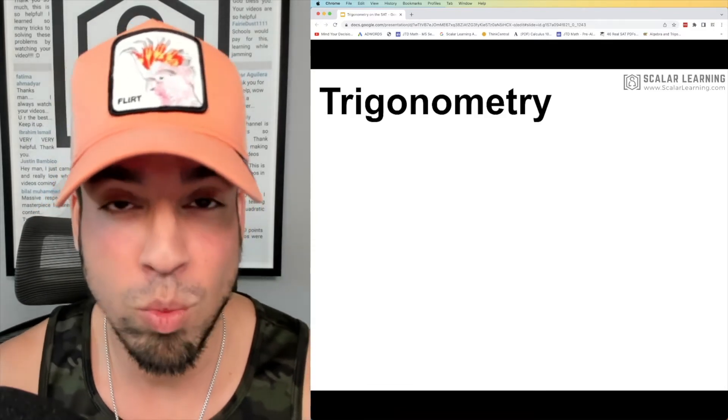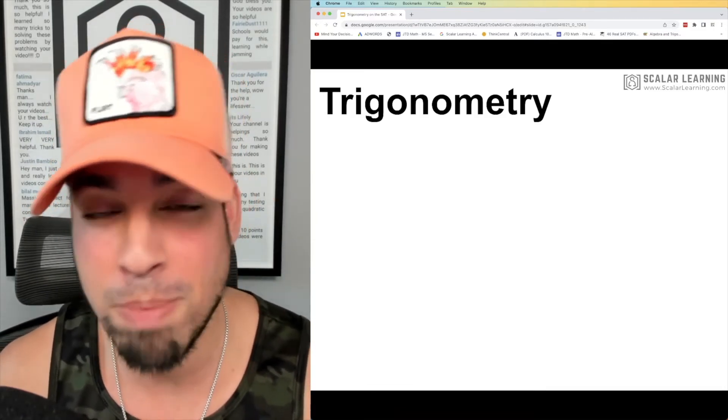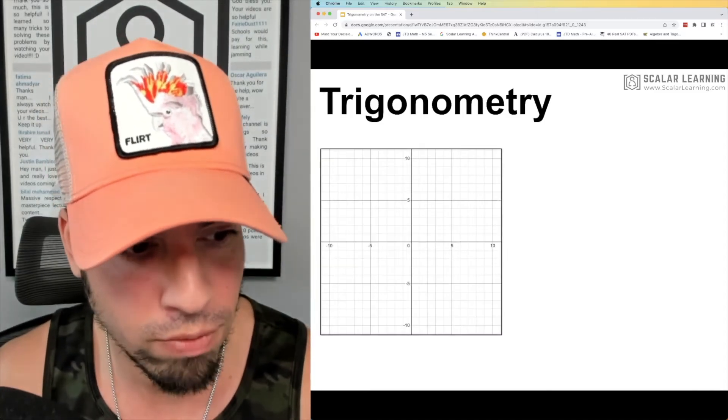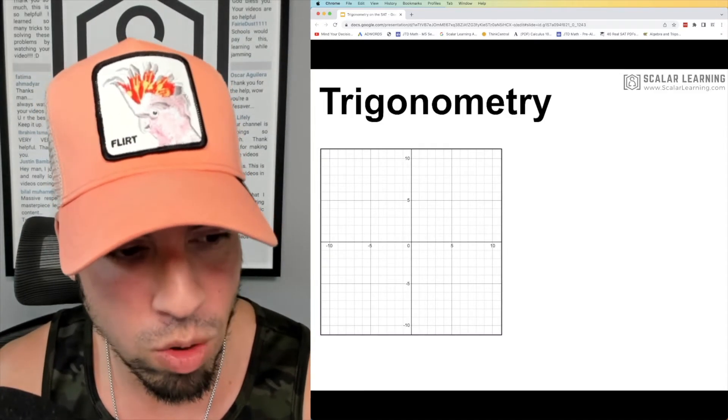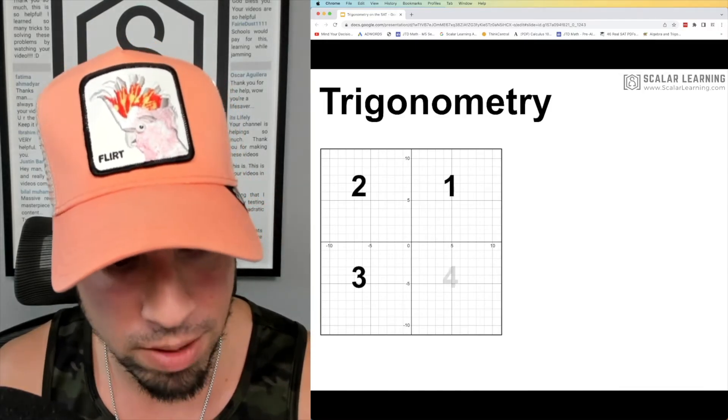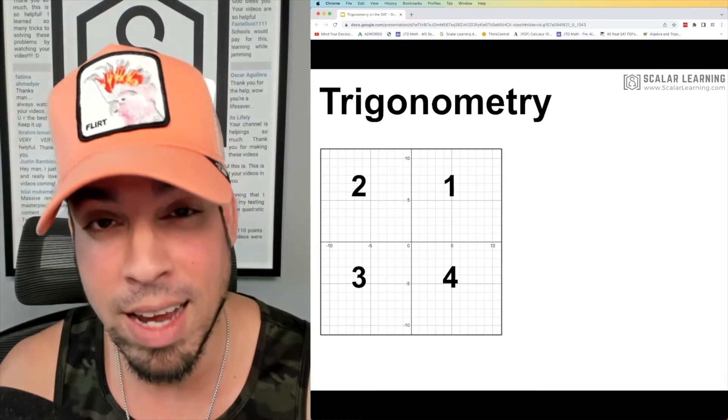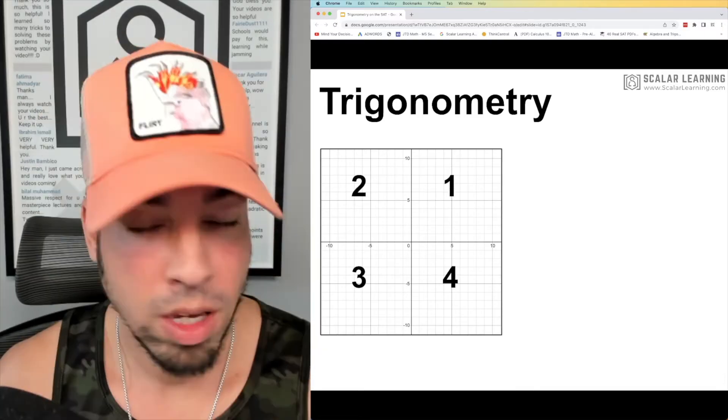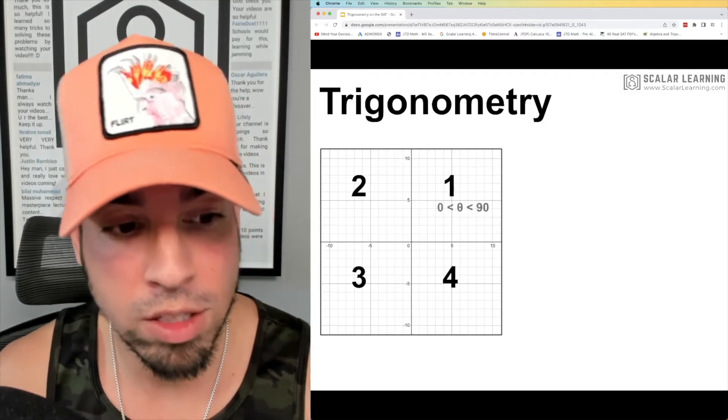The other thing we want to be familiar with on the SAT is where sine, cosine, and tangent are positive and negative—so that's important as well. If you look at this quadrant here, four quadrants, the standard x-y coordinate plane, we see that we got quadrant one, two, three, and four. All of these functions are going to have different signs depending on what quadrant they're in.